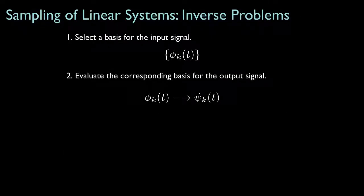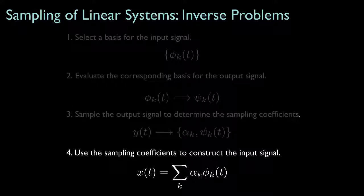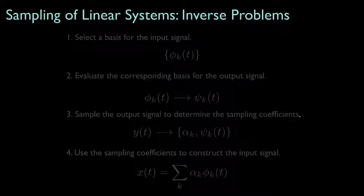The steps for an inverse problem share the same first two steps: select a basis for the input, then determine the corresponding outputs for each basis function. This analysis depends on the wise choice of input basis functions, which is part of the art of using this powerful method. Because for an inverse problem we know the output, the next step is to evaluate the sampling coefficients for the output signal relative to the output basis functions. It's therefore important to select an input basis that results in an output basis amenable to easy sampling. Finally, we use the output sampling coefficients with the input basis to construct the input signal. Whether solving a forward or inverse problem, the method of sampling linear systems is a powerful approach that we'll explore in great detail in subsequent lessons.